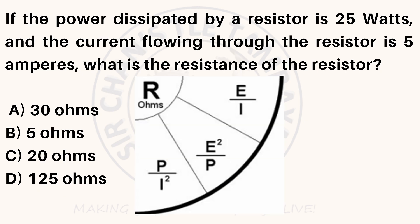If the power dissipated by a resistor is 25 watts and the current flowing through the resistor is 5 amperes, what is the resistance of the resistor? A. 30 ohms. B. 5 ohms. C. 20 ohms. D. 125 ohms.